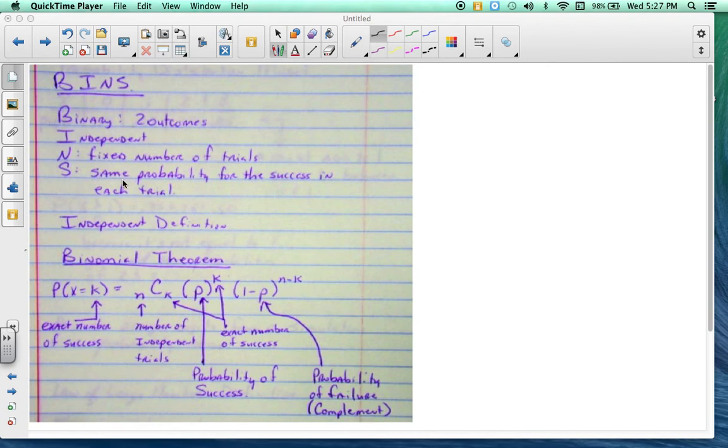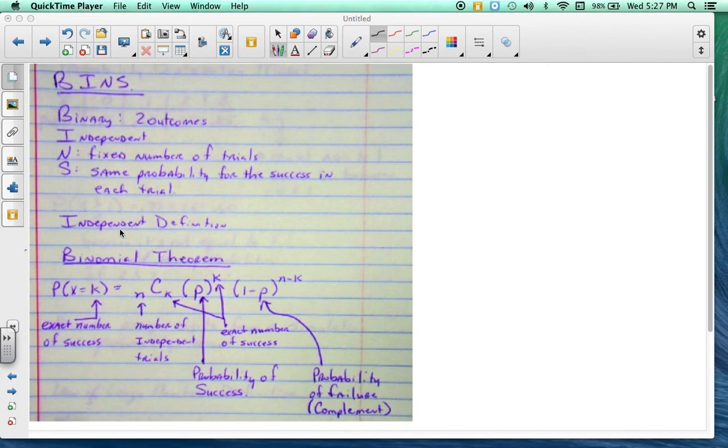Are there a fixed number of trials, and do each one of them have the same probability for the success in each trial? You need to know how to tell me what independent means. You just need to know the definition of that.